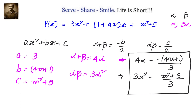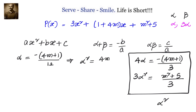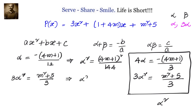We will equate alpha² from both equations to find m. From the first equation: alpha equals minus (4m+1) divided by 12. Squaring both sides: alpha² equals (4m+1)² divided by 144. From the second equation: 3 alpha² equals (m²+5) divided by 3, so alpha² equals (m²+5) divided by 9.